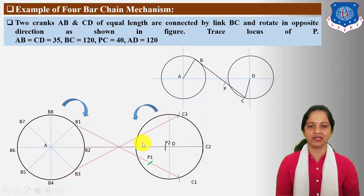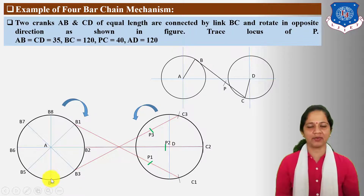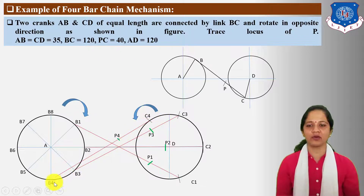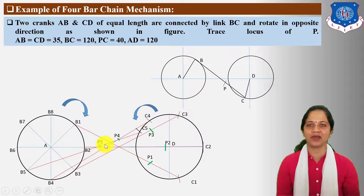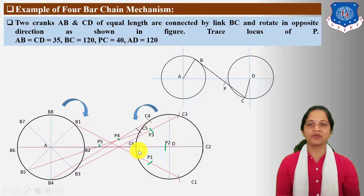Similarly, take center B4, radius 12 cm, and cut arc on this circle to find out C4 point. Connect B4C4 and locate P4 locus point. Take center B5 and find out C5 point. Connect B5C5 and locate P5. Take center B6, find out C6, connect B6C6, and locate P6 on this connecting road.